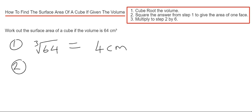So step two then, we need to square this 4. So 4 squared is 4 times 4, which is 16 cm². So this is the area of one square face on our cube.